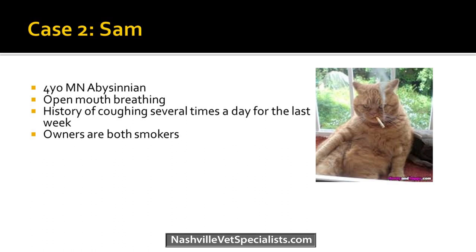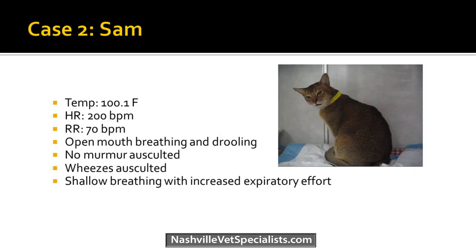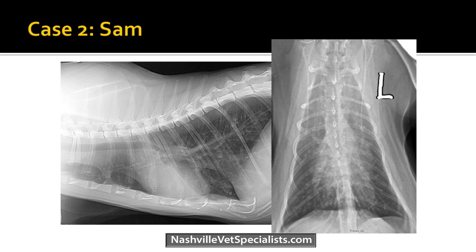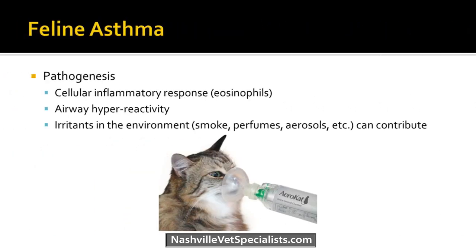The second case is Sam — a 4-year-old Abyssinian presenting for open-mouth breathing with a history of coughing several times a day for the last week. Both owners are smokers. On presentation: temperature 100.1, respiratory rate 70, heart rate 200, open-mouth breathing and drooling. No murmur, but you hear wheezes and shallow breathing with increased expiratory effort. His x-rays show a bronchial pattern with train tracks; the heart does not look enlarged. Sam has asthma.